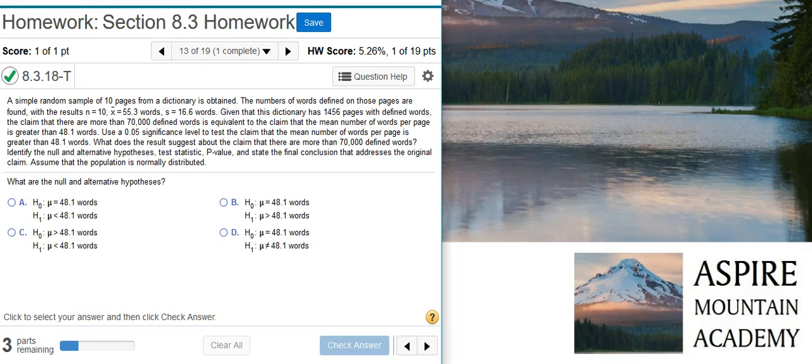Here's our problem statement. A simple random sample of 10 pages from a dictionary is obtained. The number of words defined on those pages are found with the results: n equals 10, x-bar equals 55.3 words, s equals 16.6 words. Given that this dictionary has 1,456 pages with defined words, the claim that there are more than 70,000 defined words...